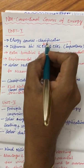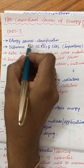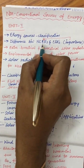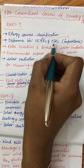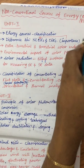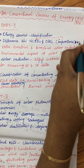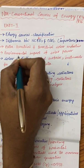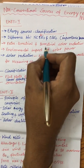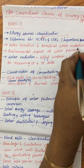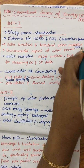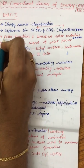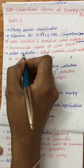The first and foremost topic is the classification of energy sources and the differences between non-conventional and conventional energy resources — this is a very important question we can expect this semester. Extraterrestrial and terrestrial solar radiation is also one of the most expected questions for this academic year, having been asked many times in previous year question papers.